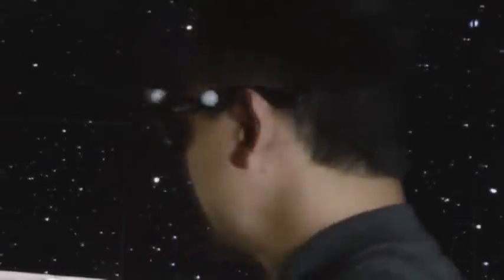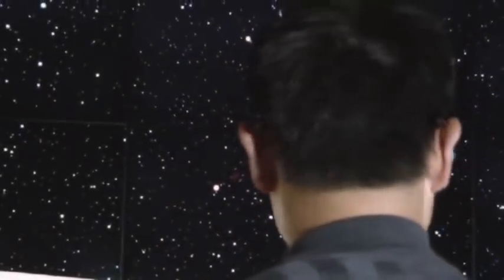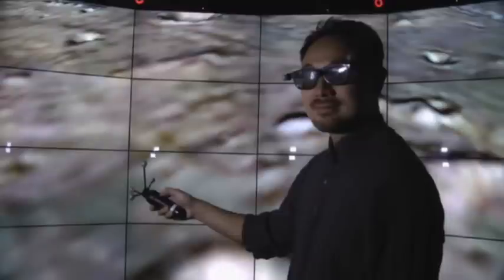There is a set of glasses that you wear with little tracking dots on them, so that the computer can determine, using cameras, where you are looking at in the space, so that it can repaint the images to fit your particular perspective.